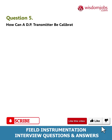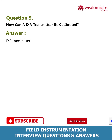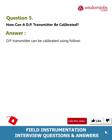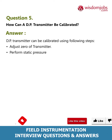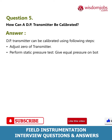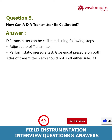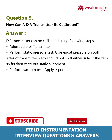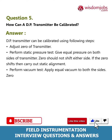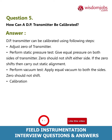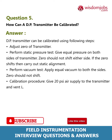Question 5: How can a DP transmitter be calibrated? Answer: A DP transmitter can be calibrated using the following steps. Adjust zero of the transmitter. Perform a static pressure test — give equal pressure on both sides of the transmitter; zero should not shift to either side. If the zero shifts, carry out static alignment. Perform a vacuum test — apply equal vacuum to both sides; zero should not shift.